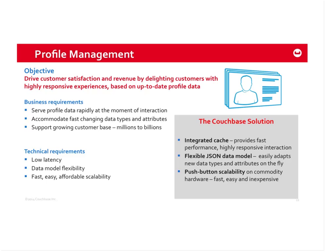From a technical perspective, you need low latency — immediate access to that user profile. You need to do away with a schema or fixed data model to speed up how quickly profiles can evolve. Easy scalability is essential as the user base grows. Couchbase helps with its integrated cache — being both a key-value store and document database with an integrated cache gives really high performance and low latency. As a JSON document database with no schema, you can modify your data model on the fly. Push-button scalability on commodity hardware makes adding new nodes very quick and easy.